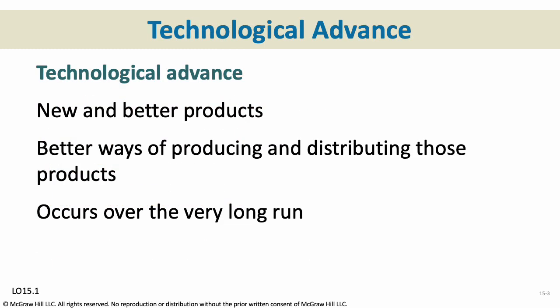Technological advance is any time we are able to make new or better goods or services, produce them in a new or better way, or distribute them in a new or better way. We can invent a new product, come up with a way to make a product cheaper, or distribute it more efficiently — those are all forms of technological advance. Generally it occurs over the very long run, but it can be as short as a few months or as long as many years, depending on what's being invented and who's doing the inventing.